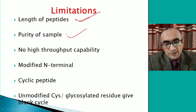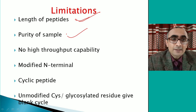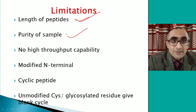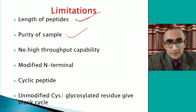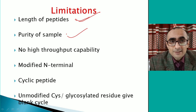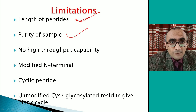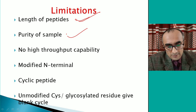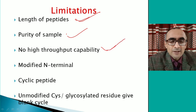Another important limitation is purity of the sample. The sample must be pure — meaning there should be a single N-terminal. If you have a heterogeneous mixture with more than one polypeptide or peptide, you will get multiple peaks and an ambiguous result. The sequence cannot be deduced; the sample must be completely pure for sequencing using the Edman degradation method. There is also no high-throughput capability — you cannot sequence many proteins simultaneously using this technique.